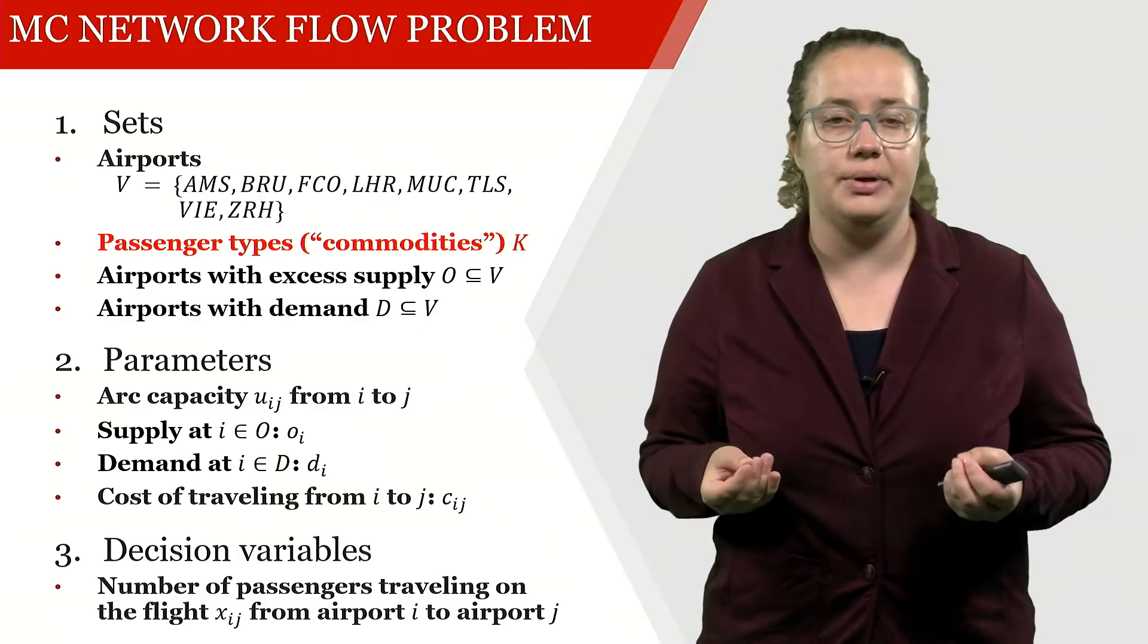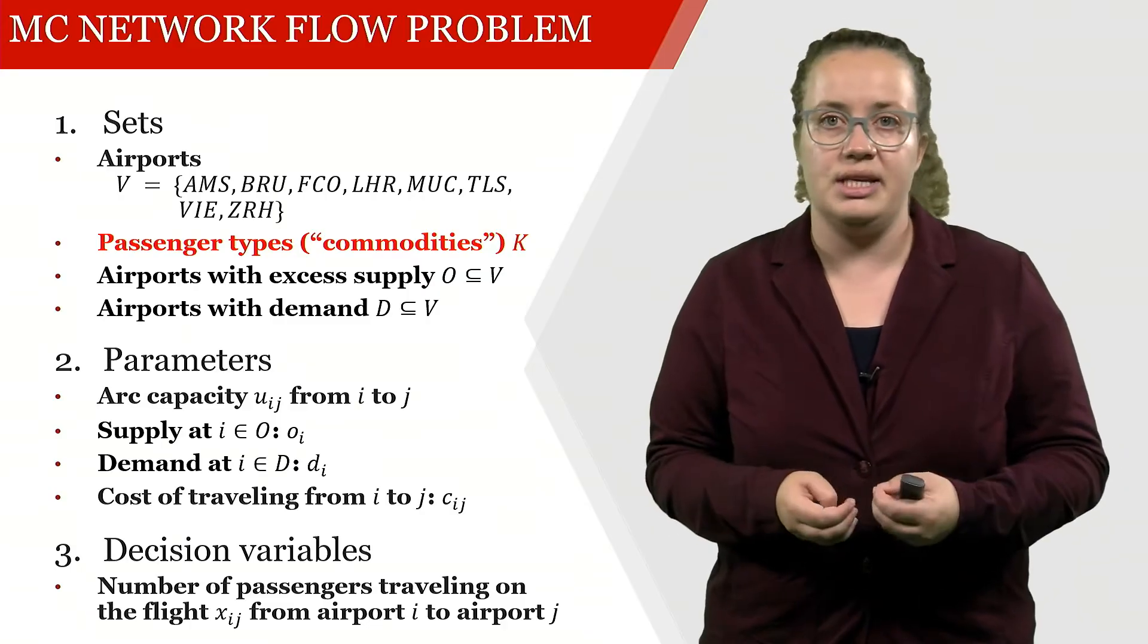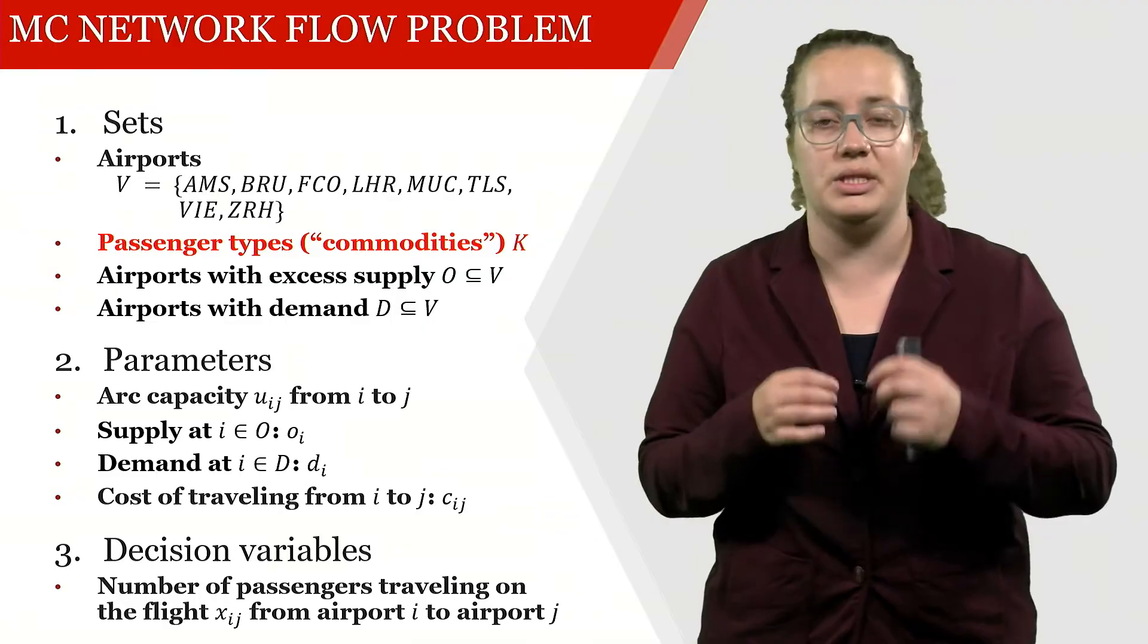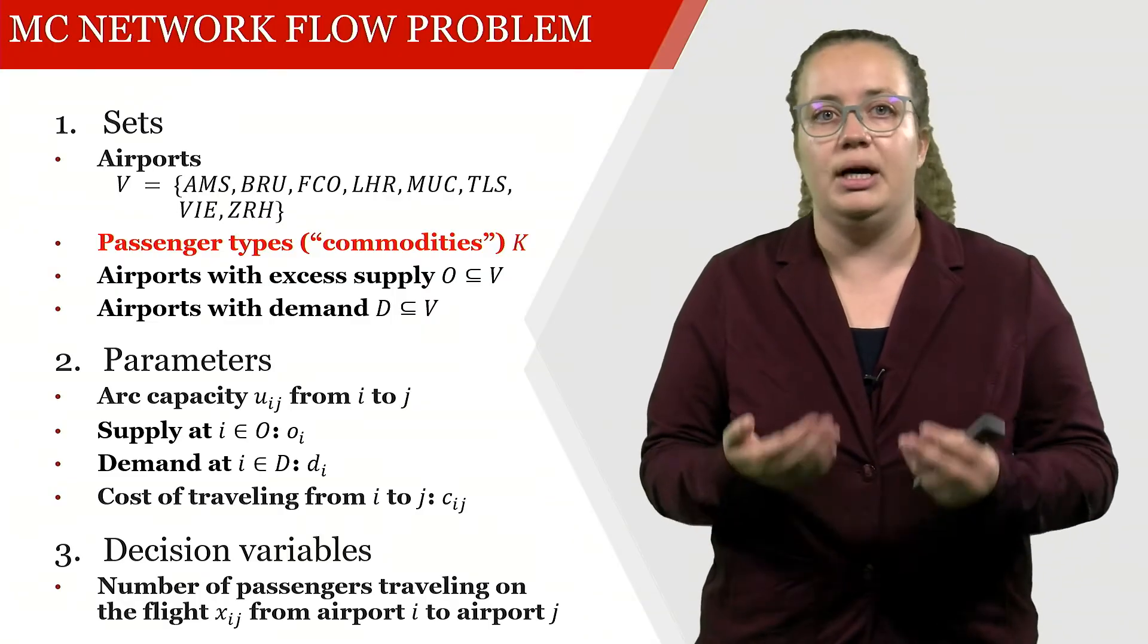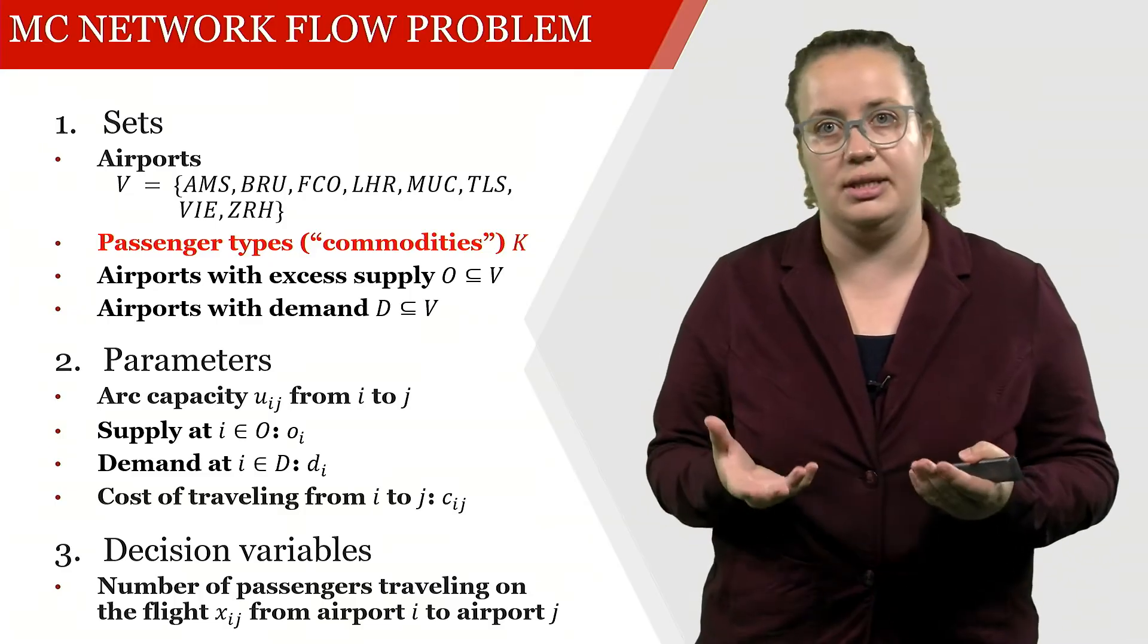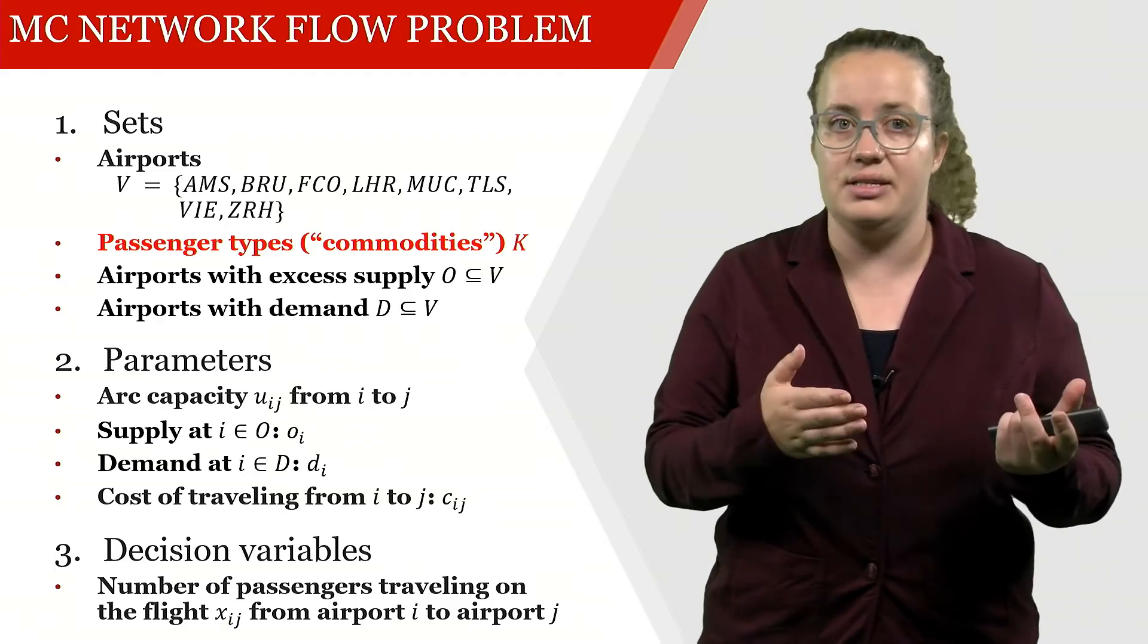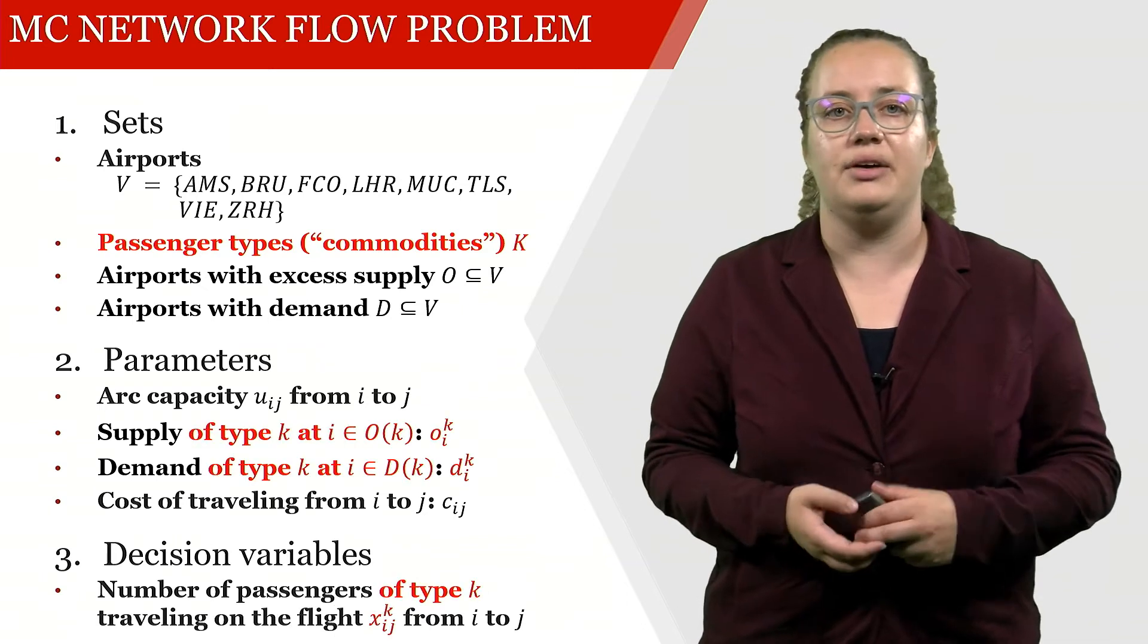So the supply is now the number of people in Rome, for example, that want to go from Rome to Amsterdam, because our passenger type is 'I want to go from Rome to Amsterdam,' and then in Rome our supply for this particular passenger type is actually the number of people that want to travel. But for example in Brussels, that's for a different passenger type. So here we have to differentiate.